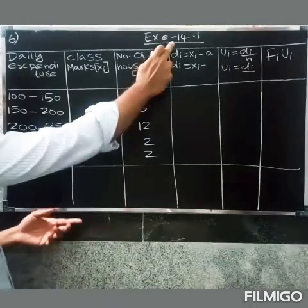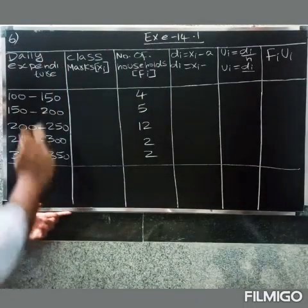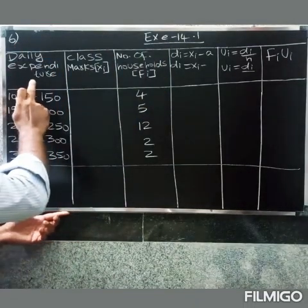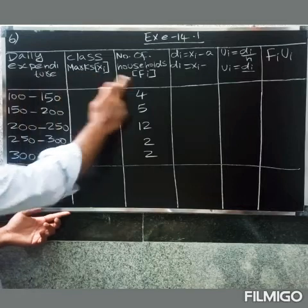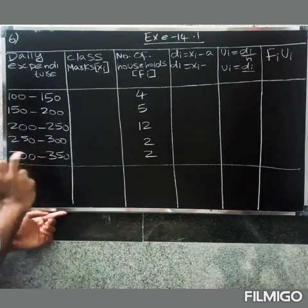Welcome friends. We will ask the sixth question of Exercise 14.1. We will get the daily expenditure and number of households, and we will find the mean value.